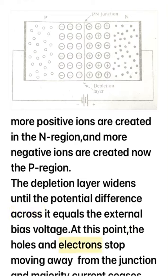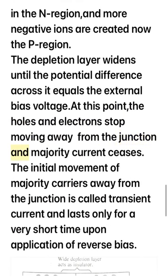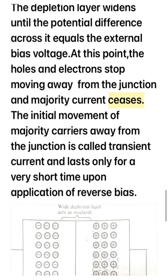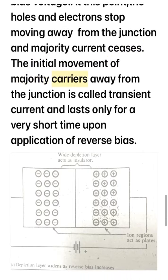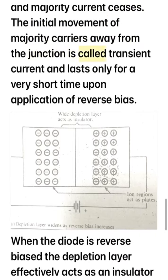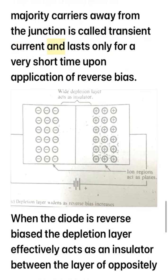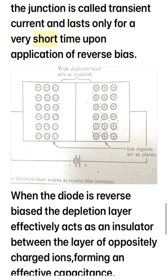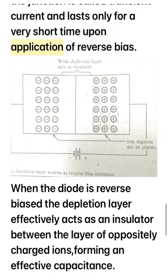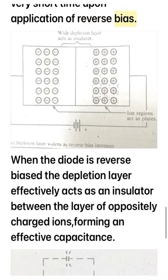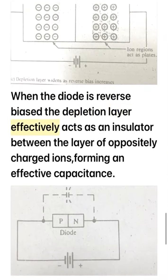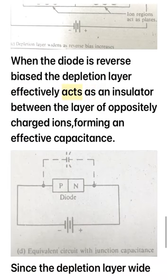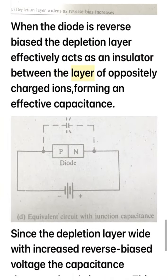At this point, the holes and electrons stop moving away from the junction and majority current ceases. The initial movement of majority carriers away from the junction is called transient current, and it lasts only for a very short time upon application of reverse bias.